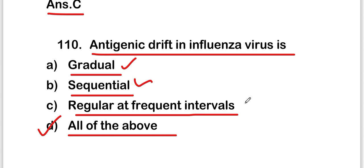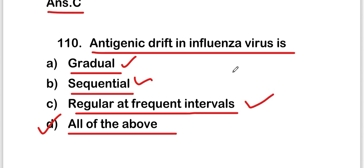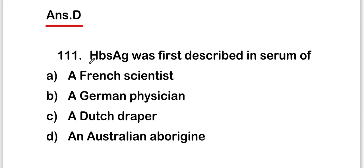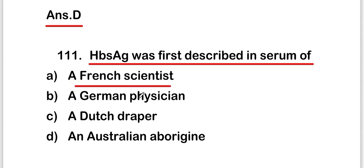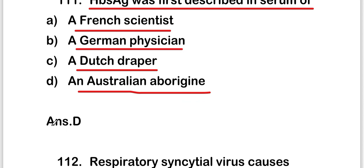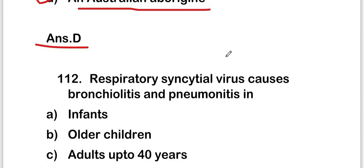The next question is: HBsAg was first described in the serum of — a French scientist, a German physician, a Dutch donor, or an Australian aborigine? The right answer is option D, that is an Australian aborigine.